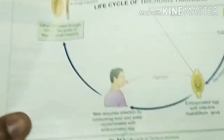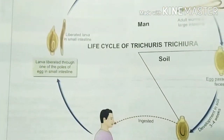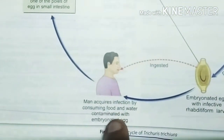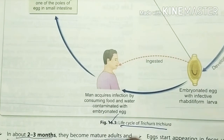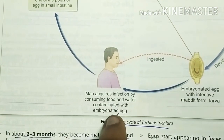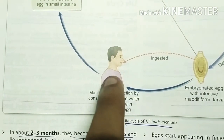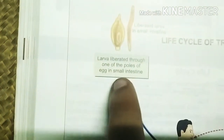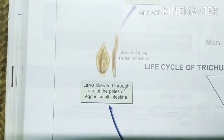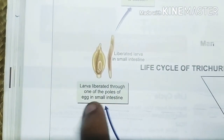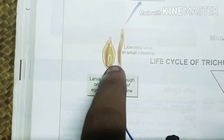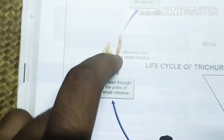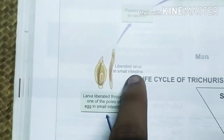Next we will learn about the life cycle of Trichuris. Man acquires the infection by food and water contaminated with embryonated egg. The larva is liberated through one of the poles of the egg — the egg has two poles, and through one of the poles the larva is liberated in the small intestine.